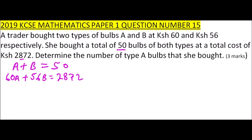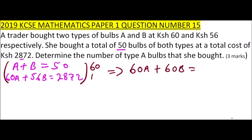We can solve them to get a and b. We modify our equations by multiplying the first equation by 60, giving us 60a plus 60b equals 3000. The second equation remains the same: 60a plus 56b equals 2872.